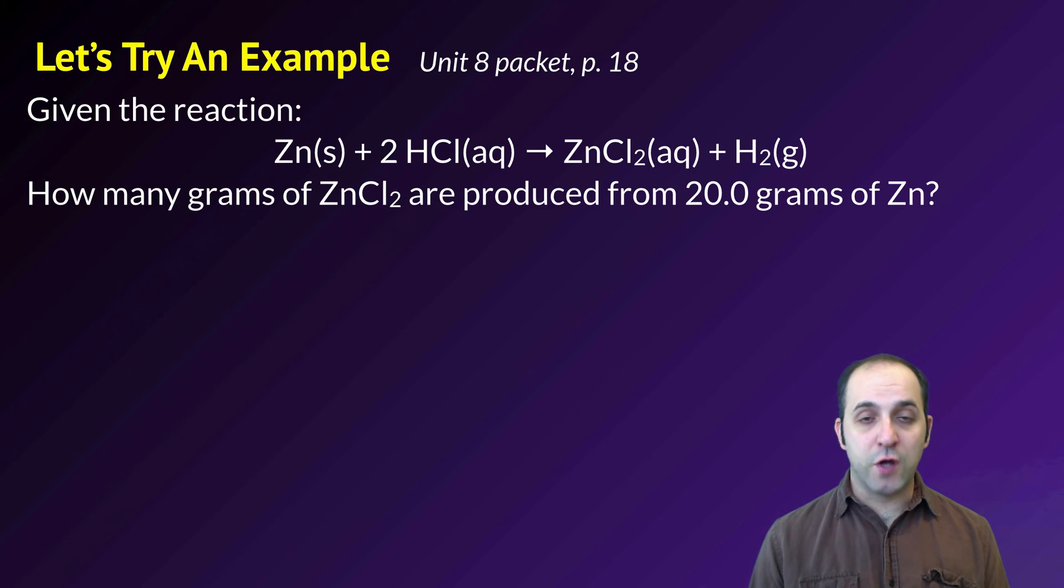Let's try an example to see what we're talking about. This is on page 18 of our unit 8 packet. Here's the reaction. I've given it to you in balanced form. How many grams of zinc chloride are produced from 20 grams of zinc? Pause the video and try it on your own, and then when you're ready, we'll go through it together.